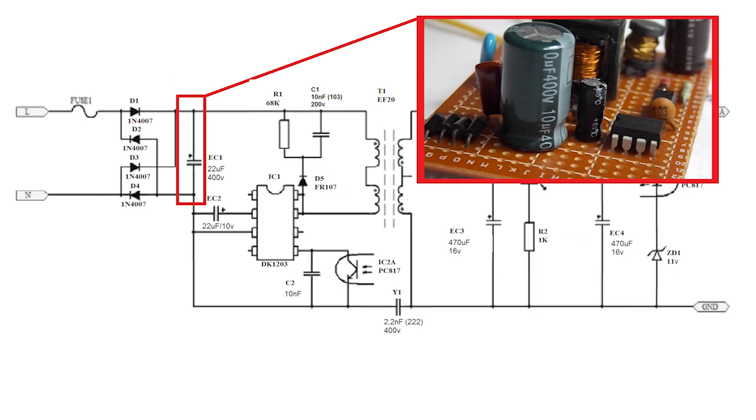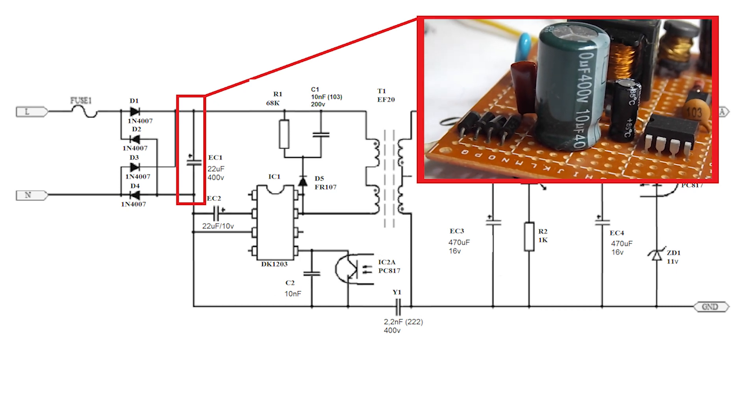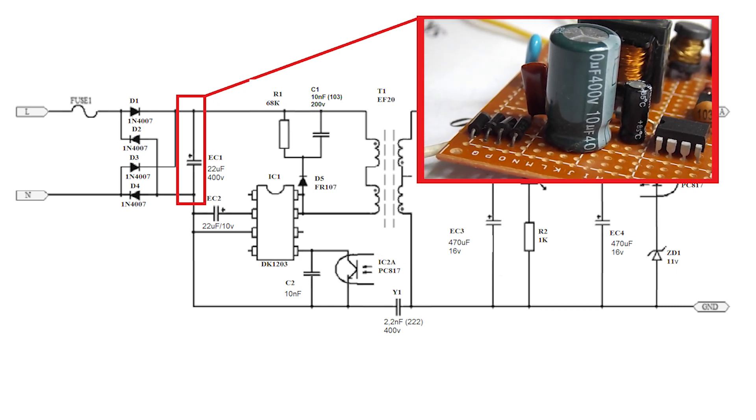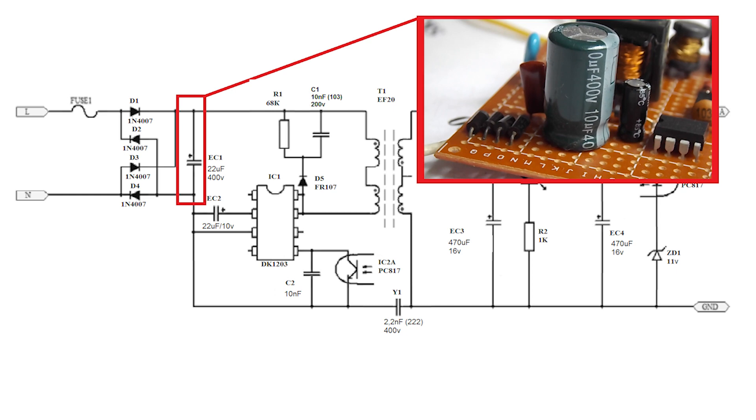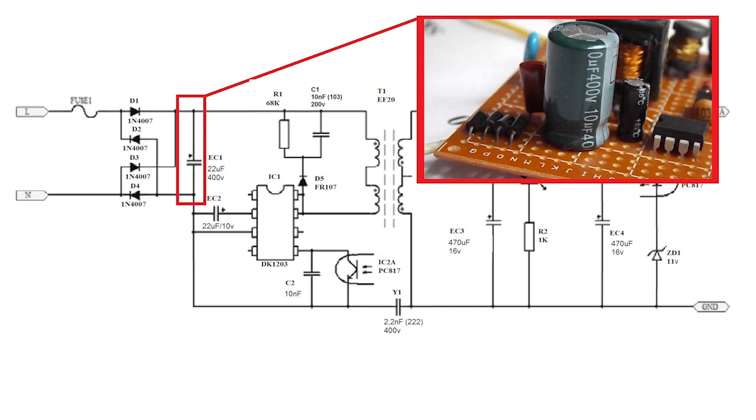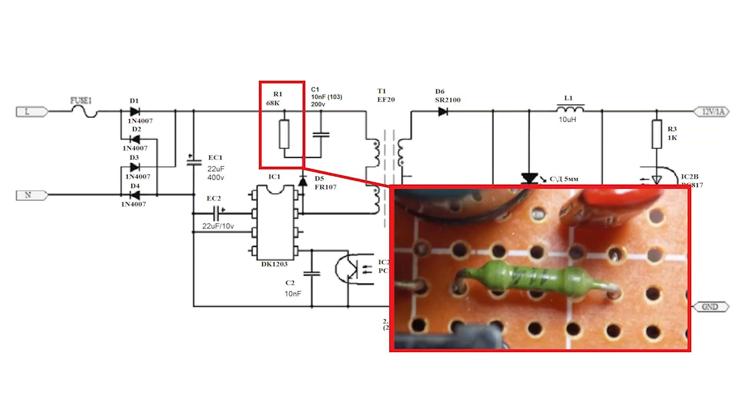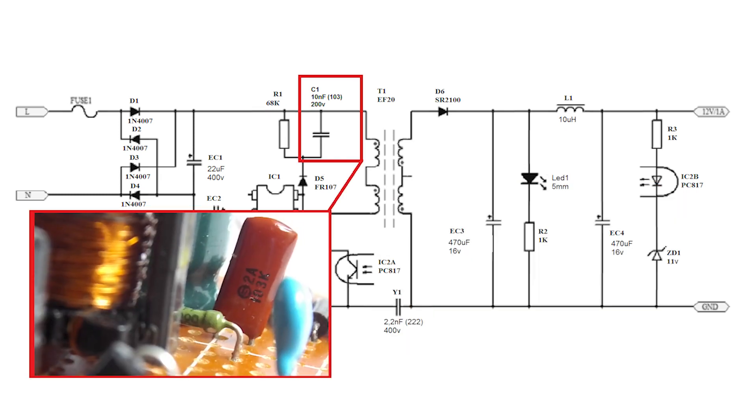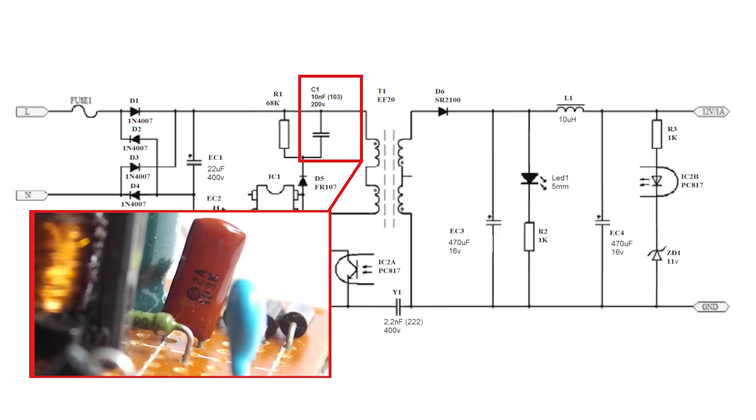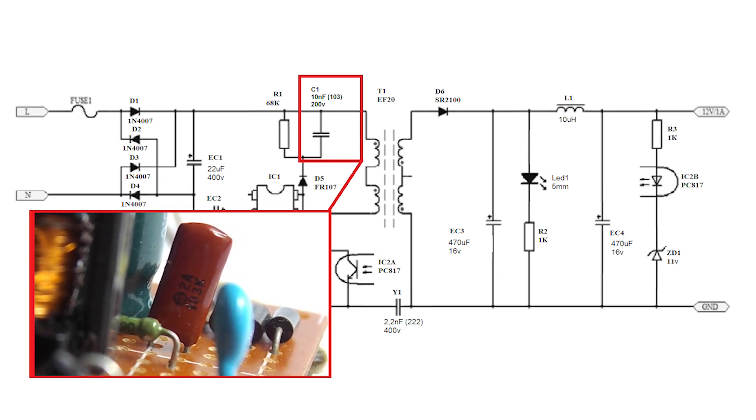EC1 is a 22 microfarad, 400 volt high voltage electrolytic capacitor. I use 10 microfarads for myself. R1 is a 68 kilo ohm resistor. Capacitor C1 10 nanofarad 200 volts. Usually they are marked 103.